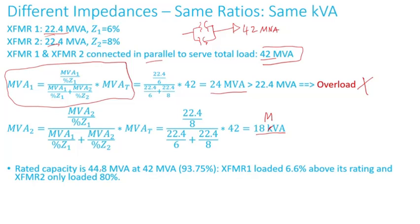One thing to note: the rated capacity of this substation — transformer one and two combined — is 44.8 MVA, and the load is 42 MVA, which is 93.75% of that capacity. Yet under this loading, which is less than the combined capability, transformer one is already loaded 6.6% above its rating. You can imagine if the load were increased to 44.8 MVA, transformer one's overloading would get even worse.